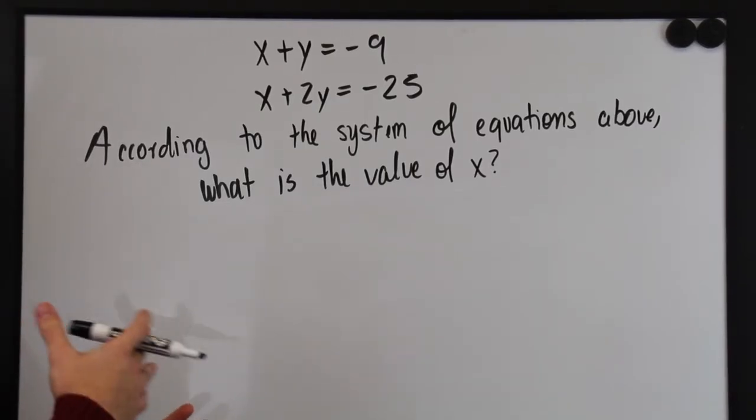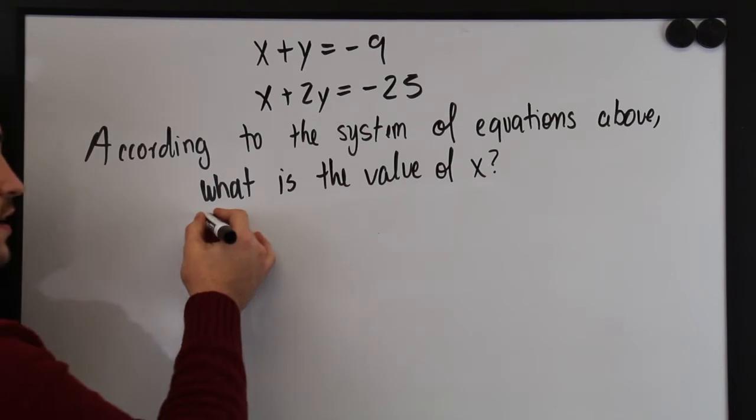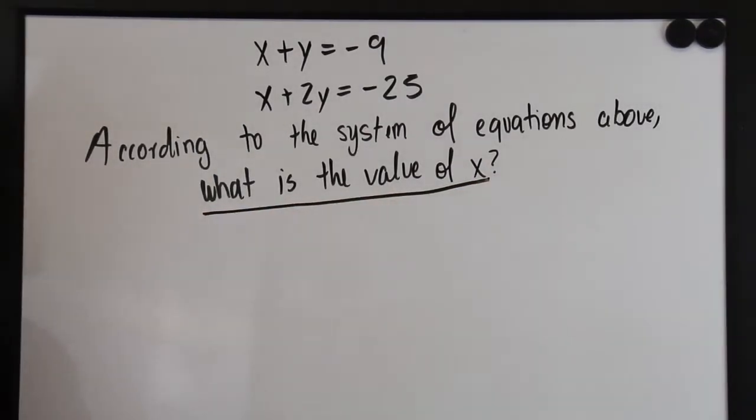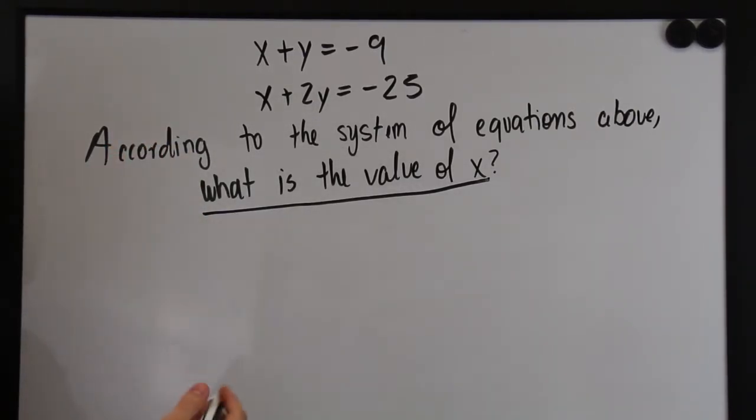To solve for the variable x, because that's what our question is asking, we first need to solve for y in terms of x. So let's take the first equation and solve for y explicitly in terms of x.